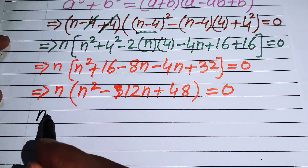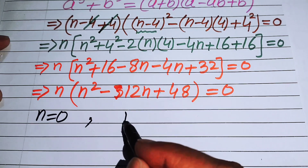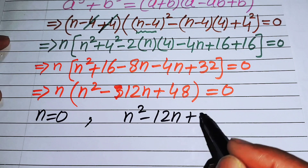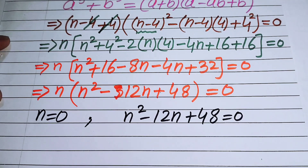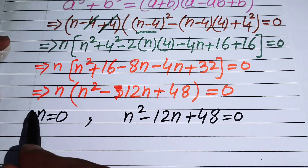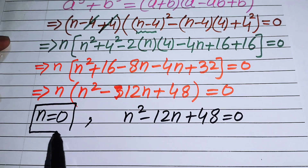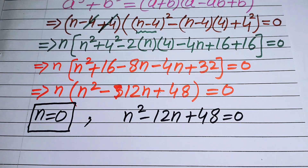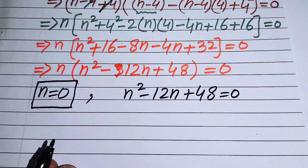We have two cases. The first case gives us n = 0 as our first root. In order to find the other roots, we need to solve the quadratic equation n² - 12n + 48 = 0.